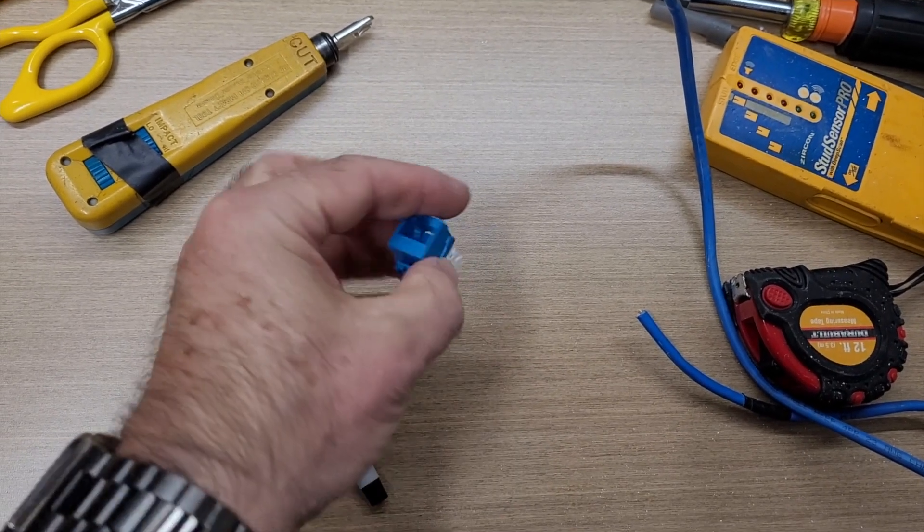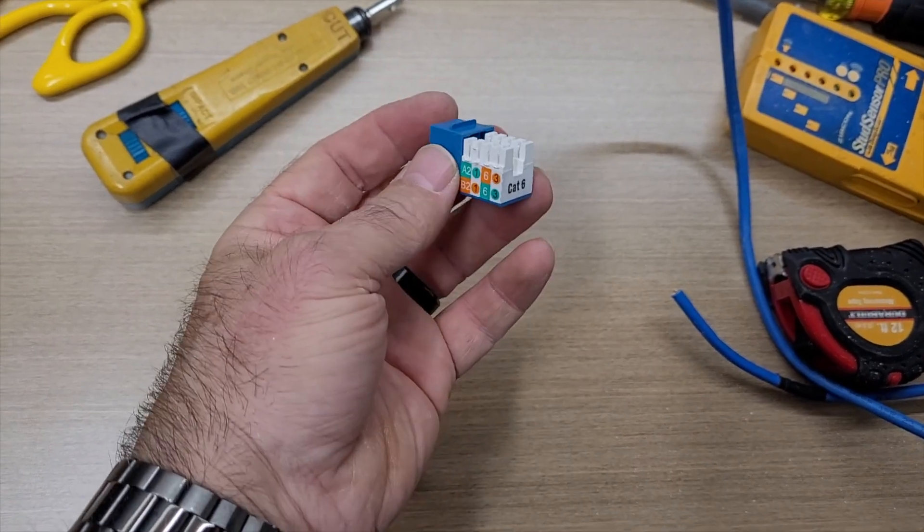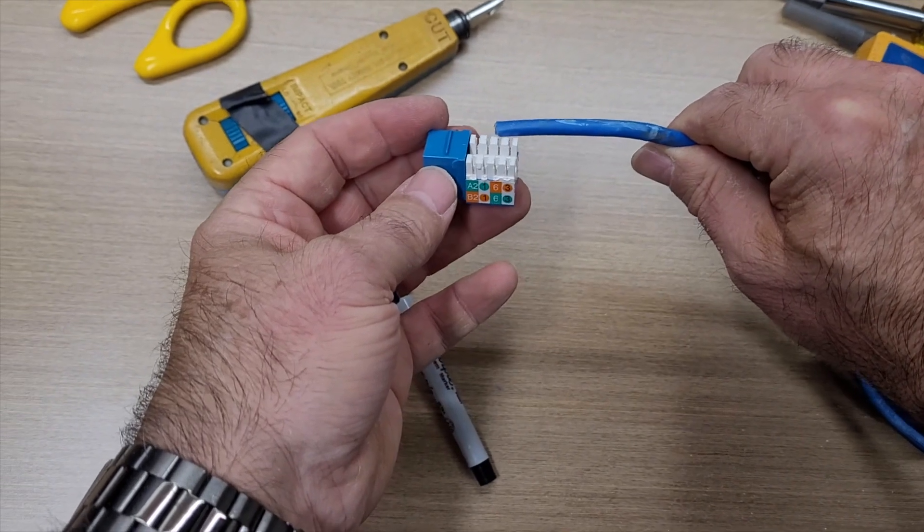So in this video, I'm going to show you how to terminate an RJ45 Keystone jack to a Cat6 or Cat5e cable.